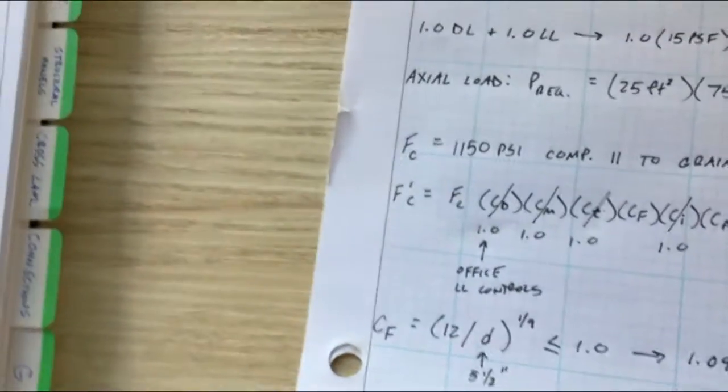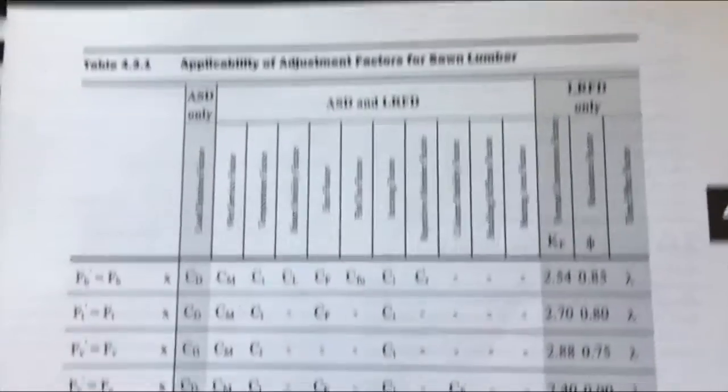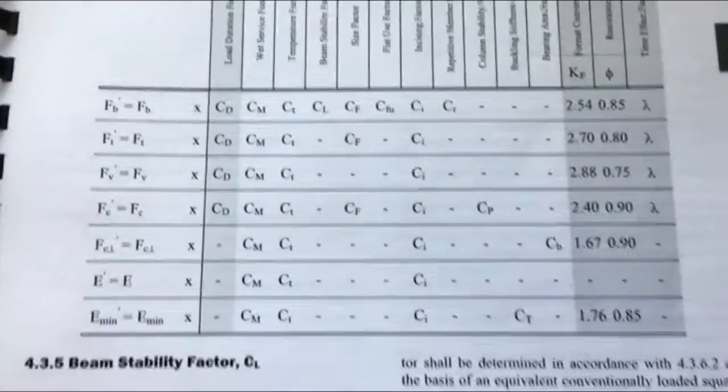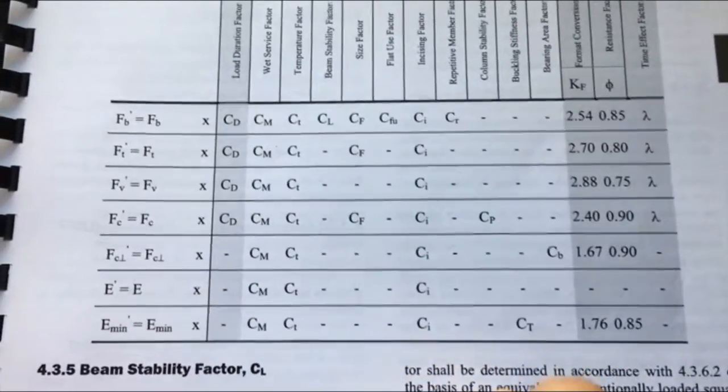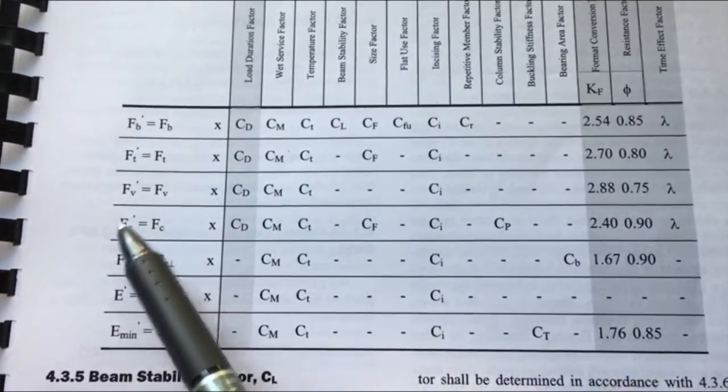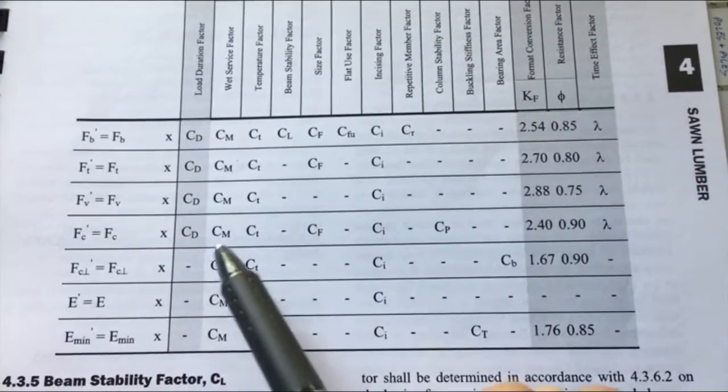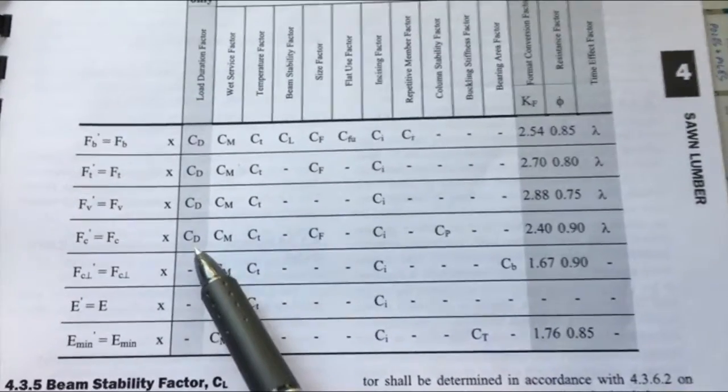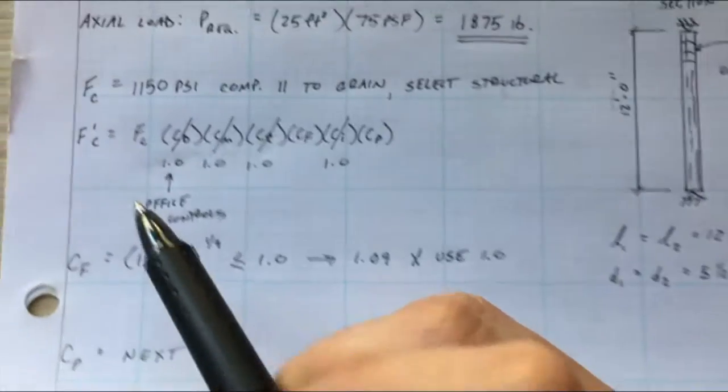Now we're going to get out of our supplement and we're going to go into the main NDS. We're going to go to the sawn lumber section chapter four, we're going to go to table 4.3.1. We need to define and figure out all of our factors. So f prime c is what we need to get to. Right now we have Fc but we need to find all of our factors that apply: CD, CM, Ct, CF, CI, CP.